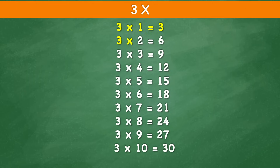3 times 2 equals 6. 3 times 3 equals 9. 3 times 4 equals 12. 3 times 5 equals 15. 3 times 6 equals 18.